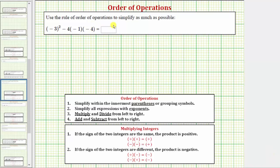We want to use the order of operations to simplify the expression. The directions may also say evaluate the expression. The given expression is the square of negative three minus four times negative one times negative four.